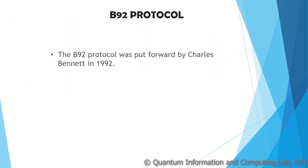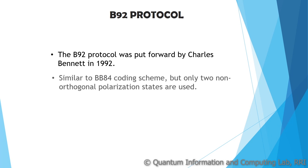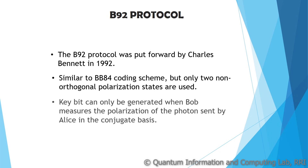The B92 protocol was put forward by Charles Bennett in 1992. It is quite similar to the BB84 protocol, with the difference that in the B92 protocol, two non-orthogonal states of conjugate polarization bases are used for encoding the keybit. A keybit can only be generated when Alice and Bob use different polarization bases to prepare and measure the state, respectively.